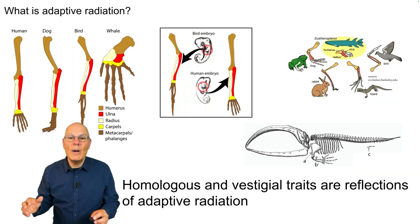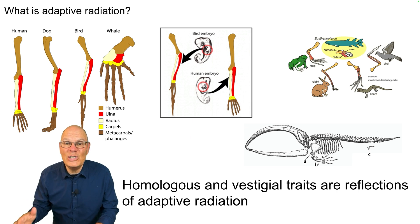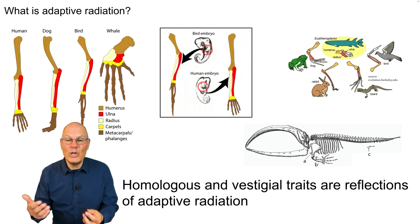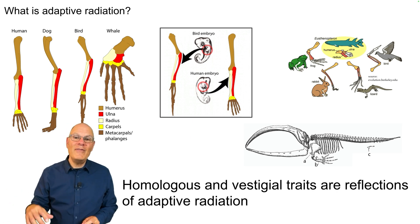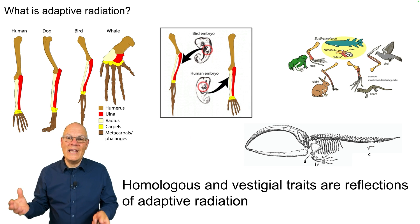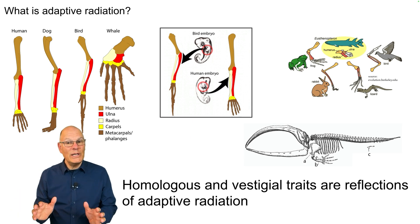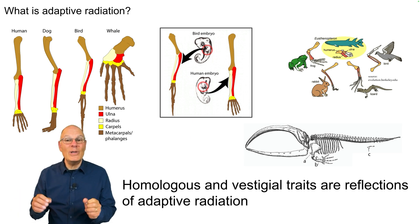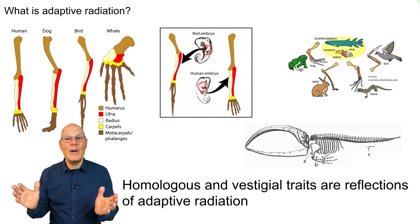Finally, homologous and vestigial traits, which we talked about in the context of evidence for evolution, are also a result of adaptive radiation. It's about splitting from a common ancestor and subsequent descent with modification.